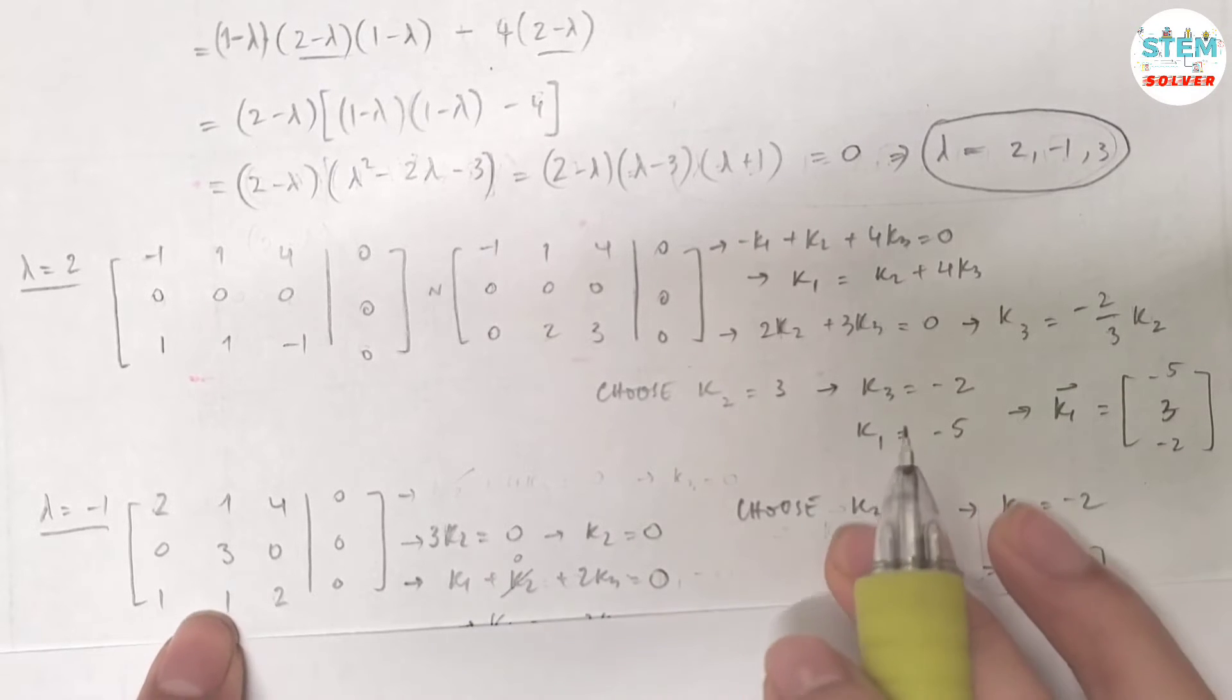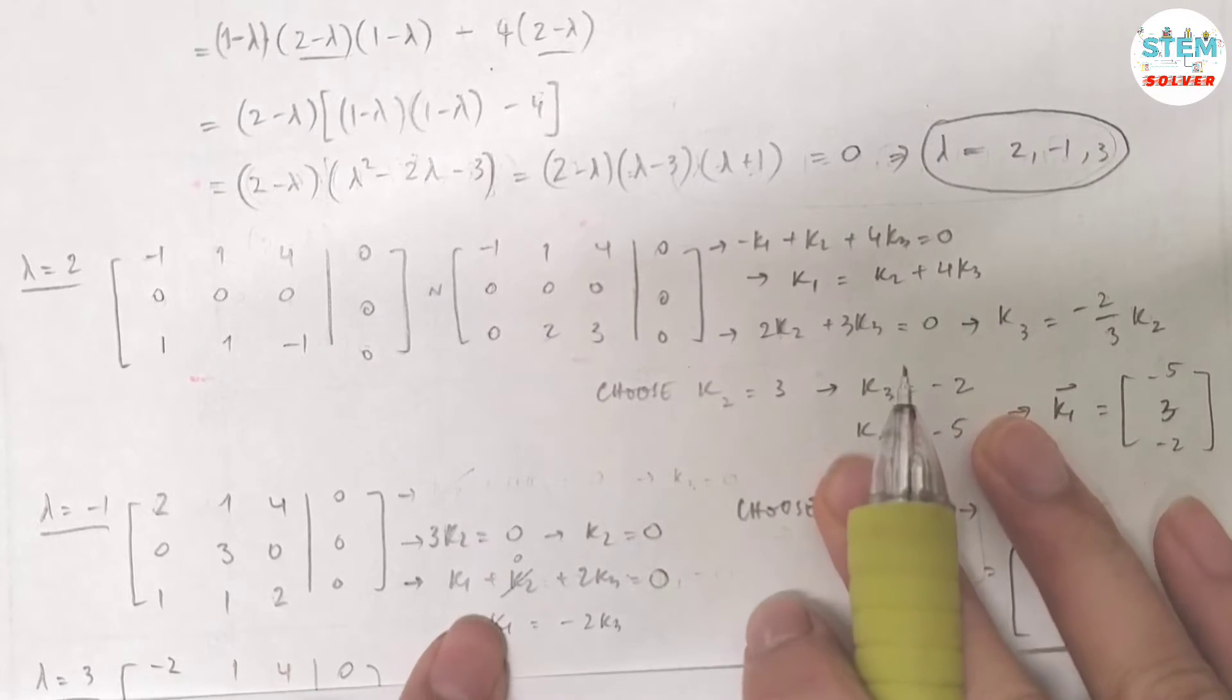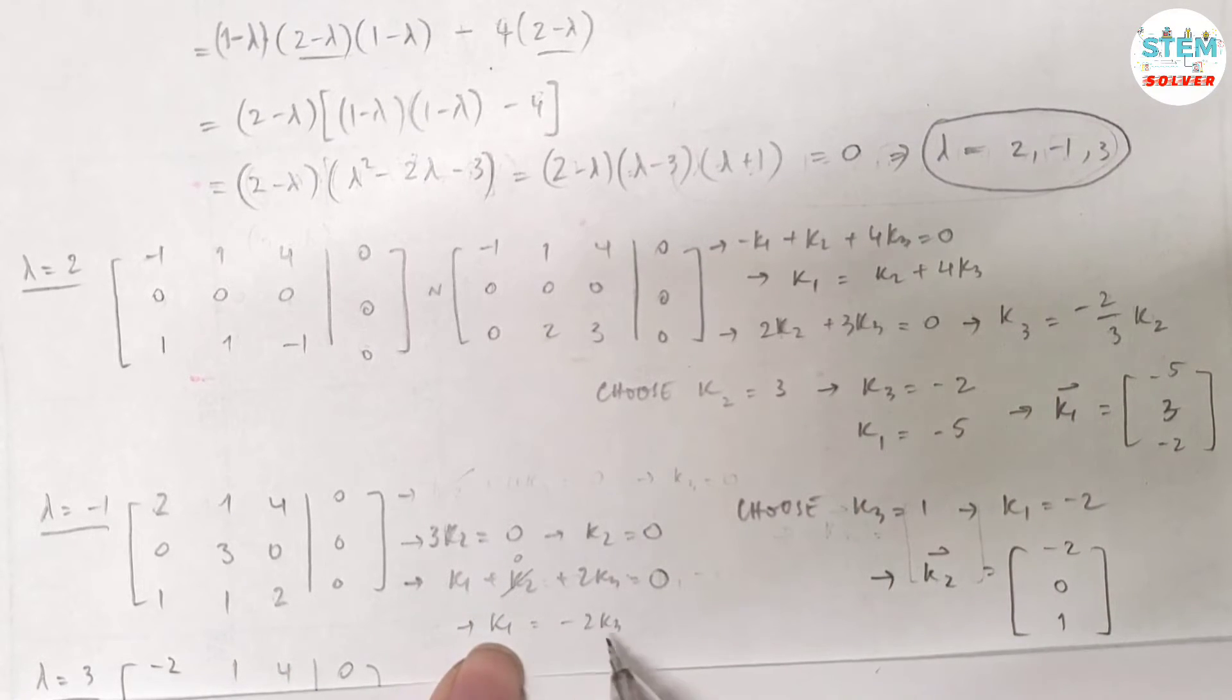From the third equation you have k₁ + k₂ + 2k₃ equals 0, and since k₂ is 0, solve for k₁, you have k₁ equals -2k₃. If I choose k₃ equals 1, then k₁ is -2. Then my vector k₂ is [-2, 0, 1]. Now you are going to repeat this process one more time for λ equals 3.